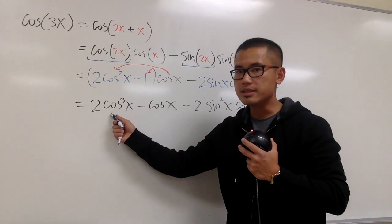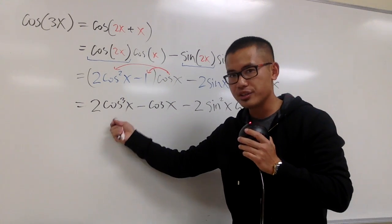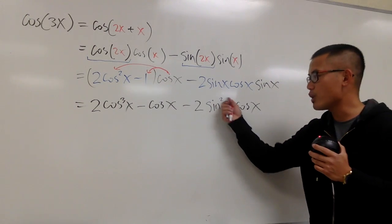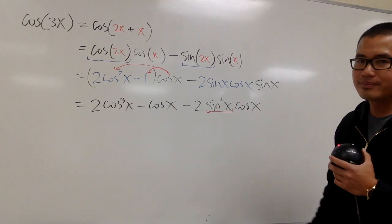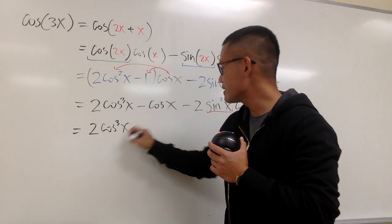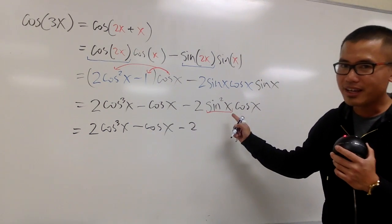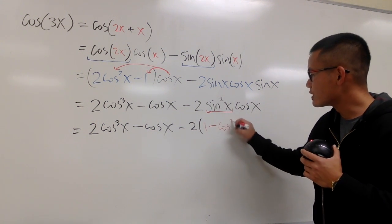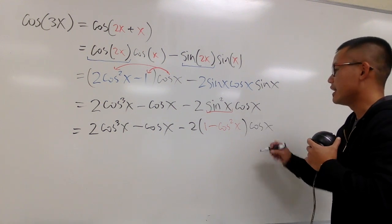As you can see, 2cos³x is good, minus cosine x is good, and the final cosine x is also good, but the sin²x is not good — we need everything in terms of cosine x. So we'll have to change sin²x. Let's write this again: 2cos³x minus cosine x, minus 2, and for sin²x we write it as 1 minus cos²x, and then we still have the cosine x at the end.